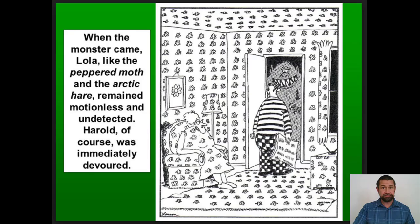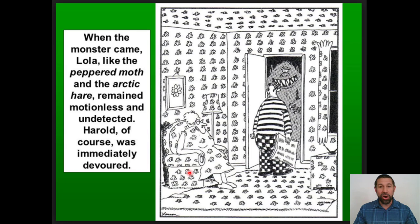When the monster came, Lola — like the peppered moth and the Arctic hare — remained motionless and undetected. Harold, of course, was immediately devoured. And with that fashion sense, he was removed from the gene pool.